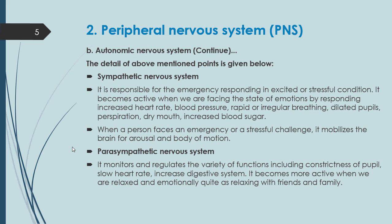The Sympathetic Nervous System becomes active when we are facing a state of emotions. Its responses include: increased heart rate, increased blood pressure, rapid or irregular breathing, dilated pupils, dry mouth, and increased blood sugar. These are the conditions associated with our emotional state, for which the Sympathetic Nervous System is responsible.